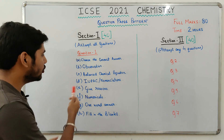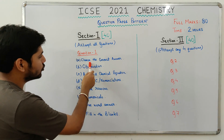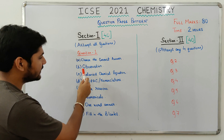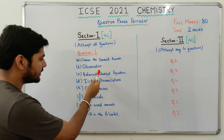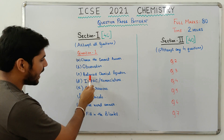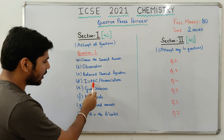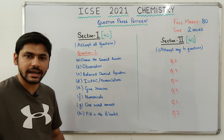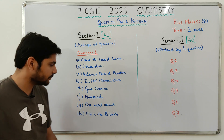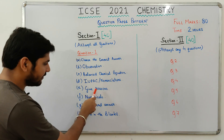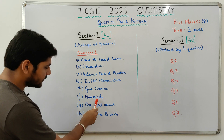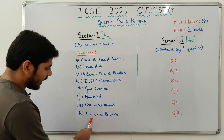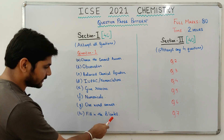The sub-parts you will face include: choose the correct answer, state the observation, balanced chemical equations, IUPAC nomenclature of organic compounds, give reasons, numericals, one word answer, and fill in the blanks.